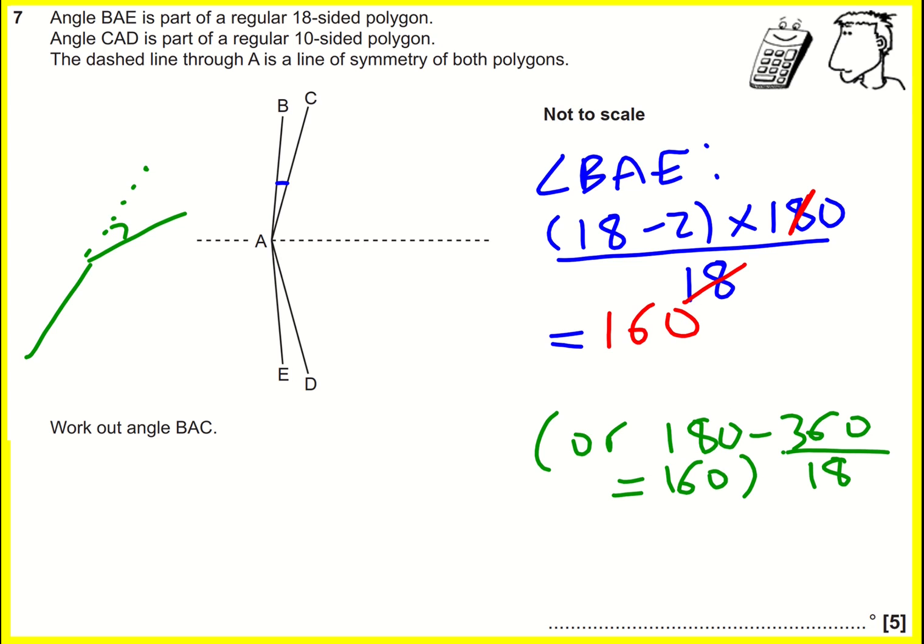So anyway, we found BAE. Right, I'm going to do the same for CAD. So angle CAD, I think this time I'll use the exterior angles. So it's going to be, to work out the exterior angle, it will be 360 divided by 10, because there are 10 of them.